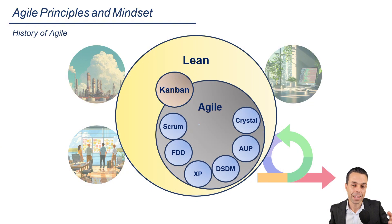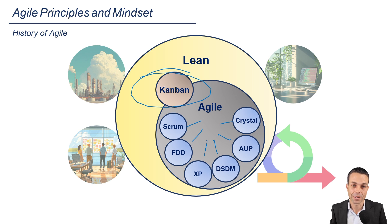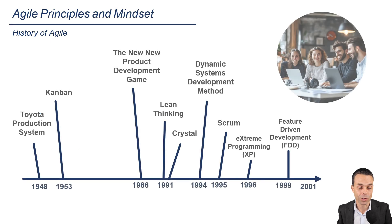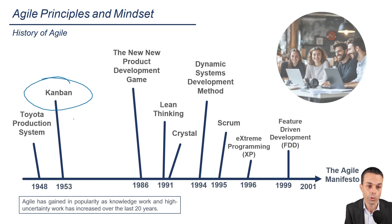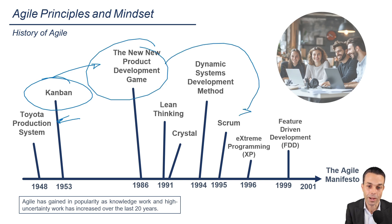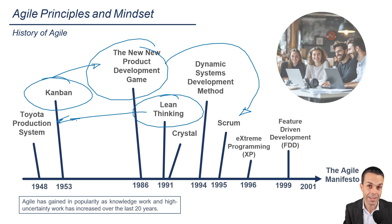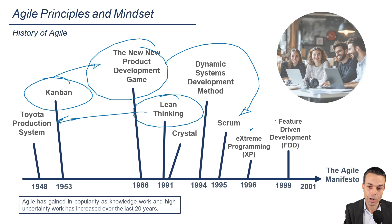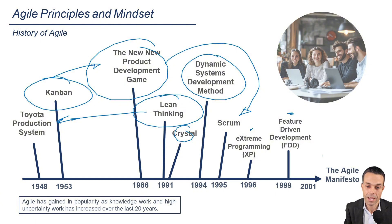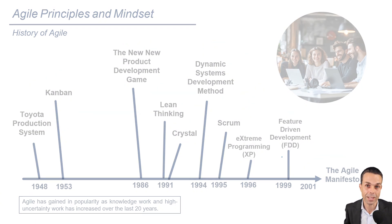We know that Agile came from many different frameworks, as we saw coming together in 2001. But even before that, it came from the Toyota Production System, or Lean, 60 years earlier. Kanban was also created at Toyota in 1953. And then many decades later, the new new product development game was the precursor to what we now know as Scrum. Lean Thinking was a book that showed us the Toyota Production System and how they were able to create value at a lower cost. And then we had Extreme Programming, Feature-Driven Development, Crystal, Dynamic Systems Development Method, and a few other frameworks that came together in 2001 to create that manifesto.